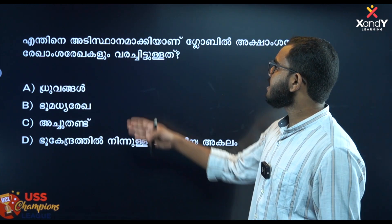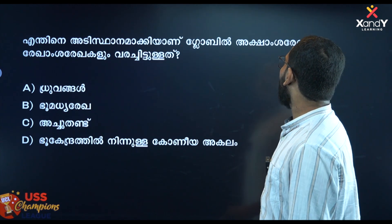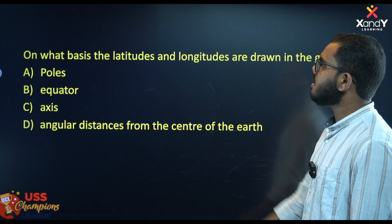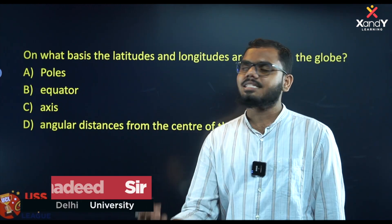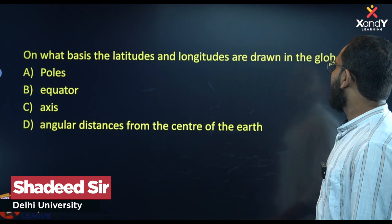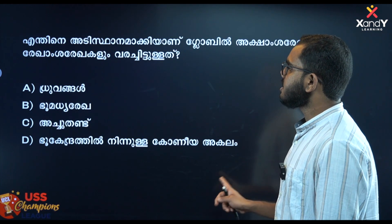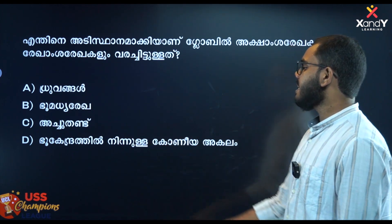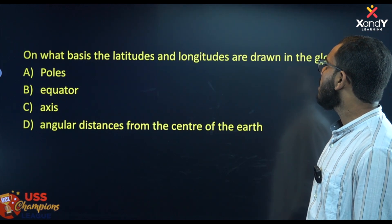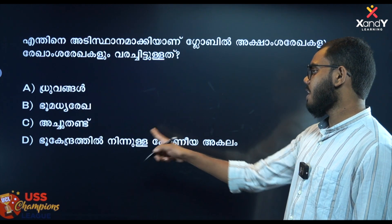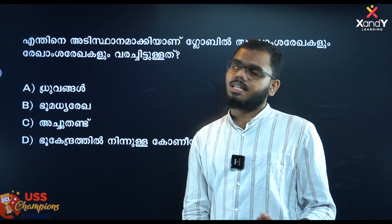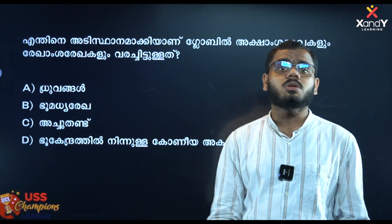The next question is: on what basis are latitudes and longitudes drawn on the globe? Option A is Poles. Option B is Bhoomatya Rega. Option C is A. Option D is Bhoomatya Rega.